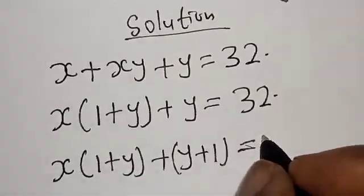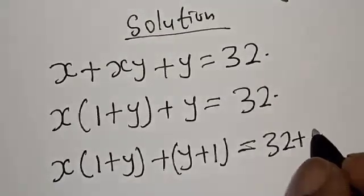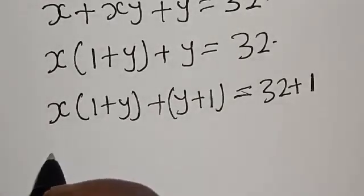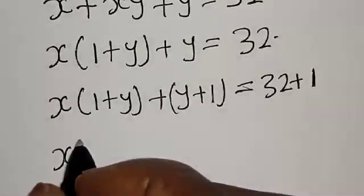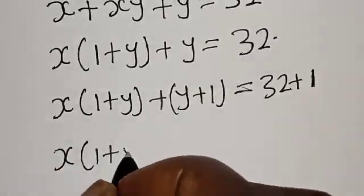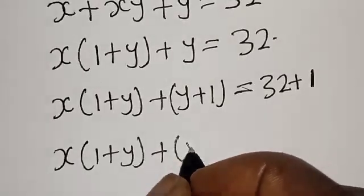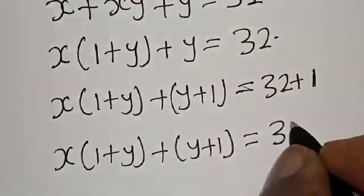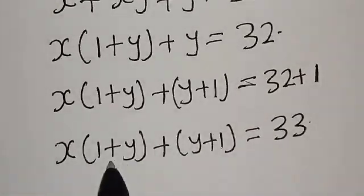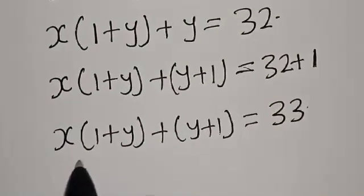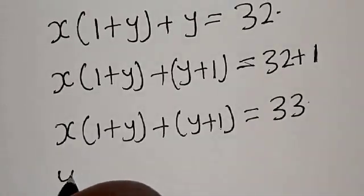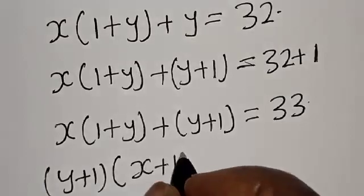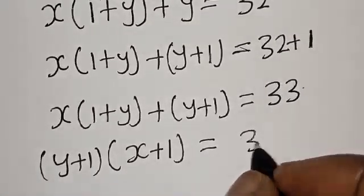That gives us x times (one plus y) plus (y plus one) is equal to 32 plus one. Now (one plus y) is common, so we factor it out: we have (x plus one) times (y plus one) is equal to 33.